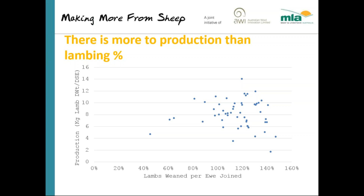The single most popular KPI bandied around the industry is lambs weaned per ewe joined. But if you only concentrate on that, you can miss the key objective — your production per hectare. It's important, and I'm not saying it's not, but if you focus on it singularly, it's no guarantee that you'll end up where you want to be.